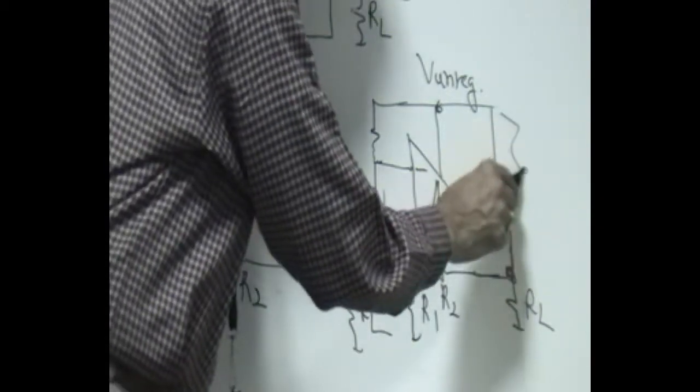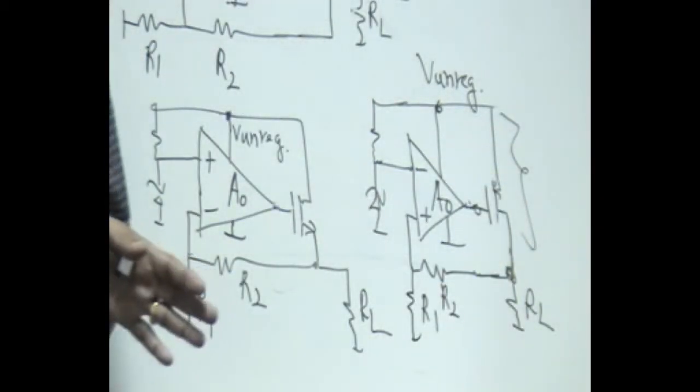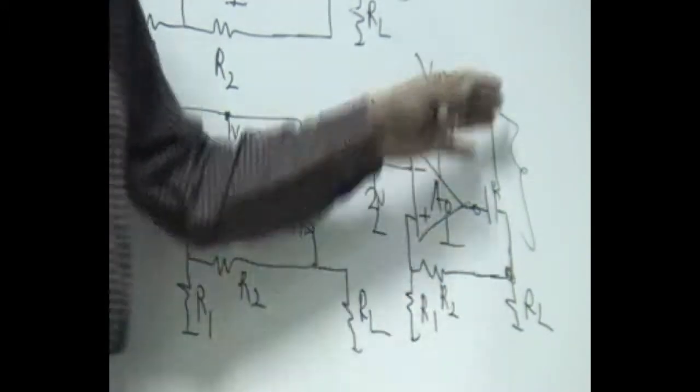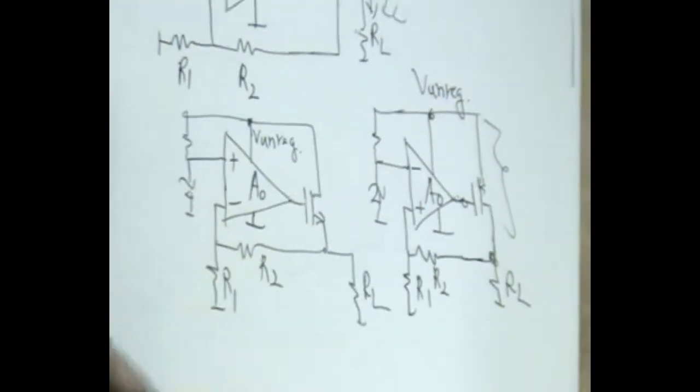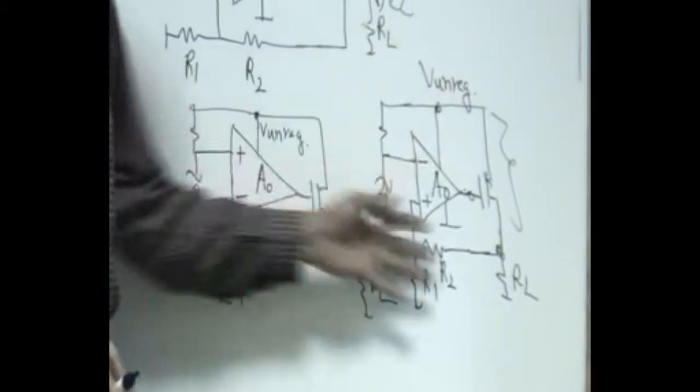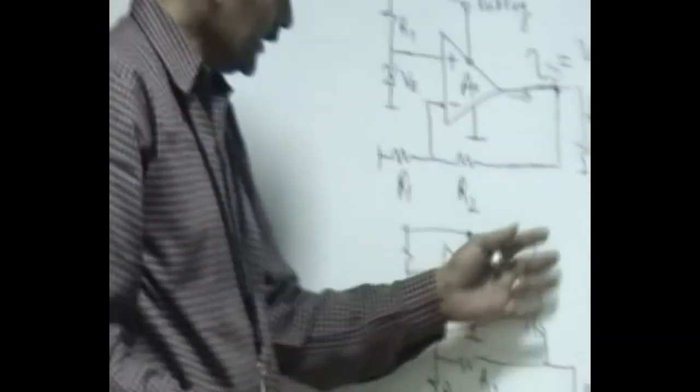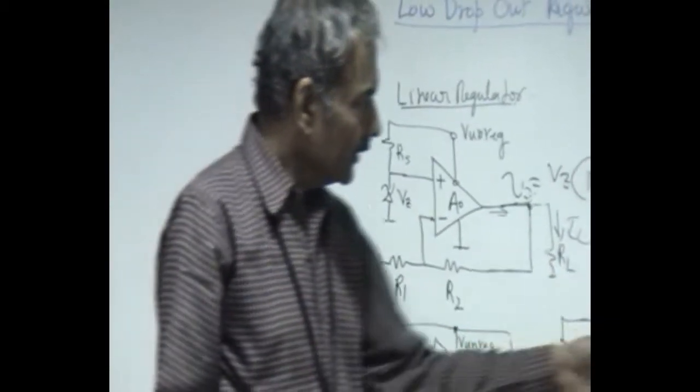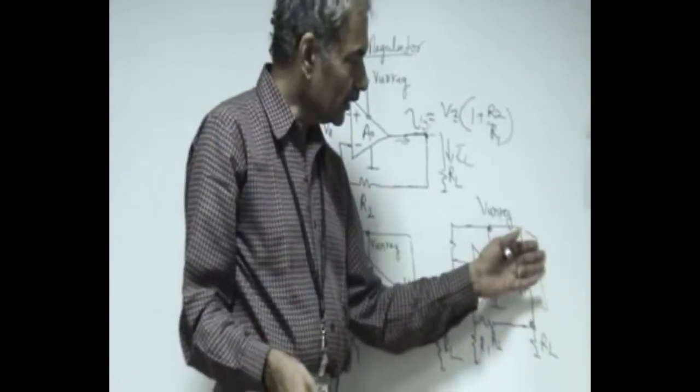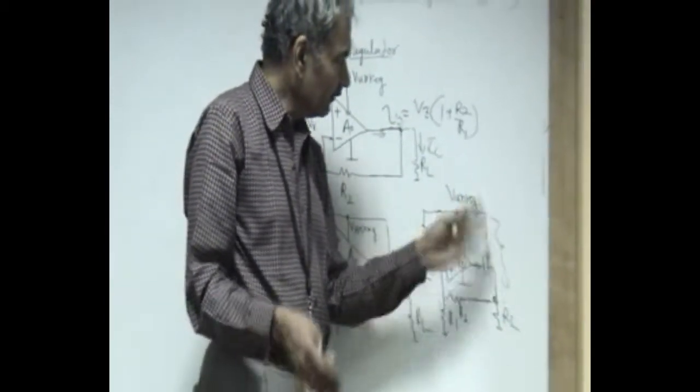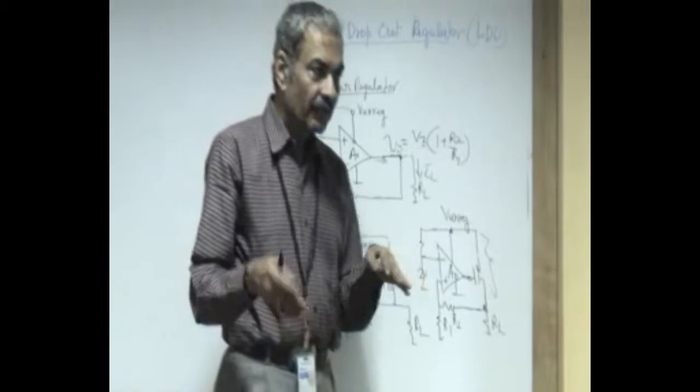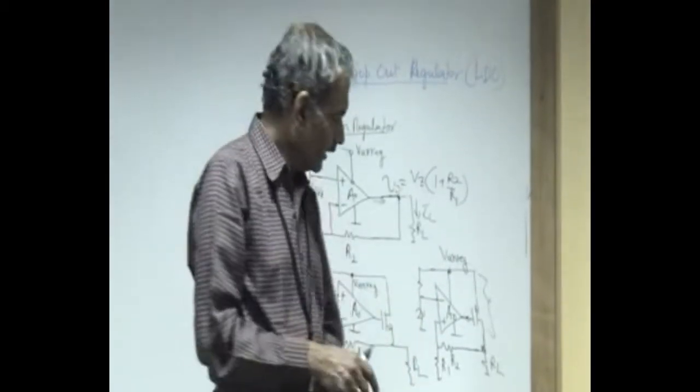Now the advantage of this is this voltage can be made as low as you please. The difference voltage times the load current is essentially the power dissipated in the IC. So here it is large, and here it can be made very small. That means this keeps functioning even when the unregulated supply comes very close to the regulated value that you design.